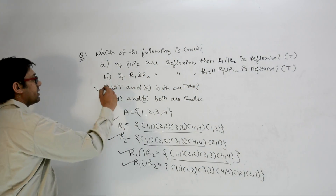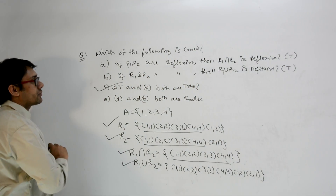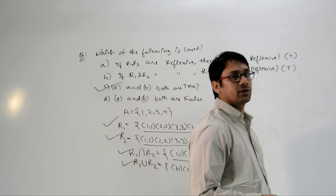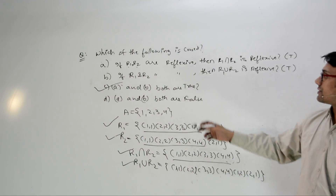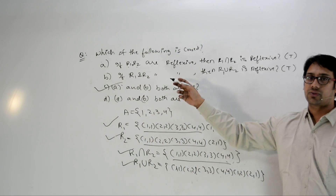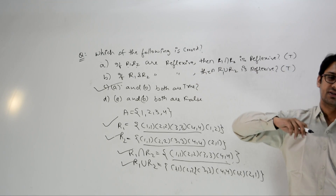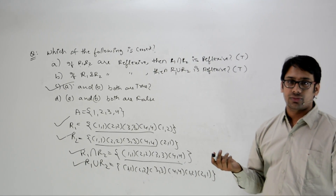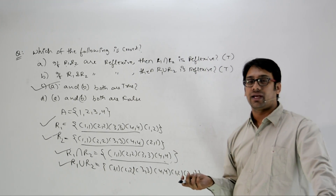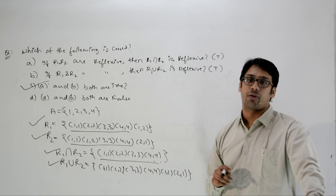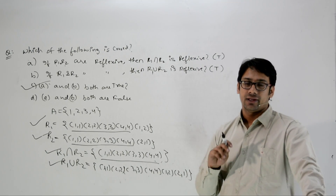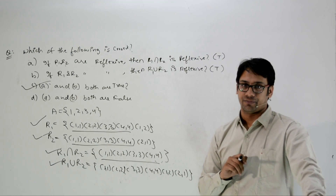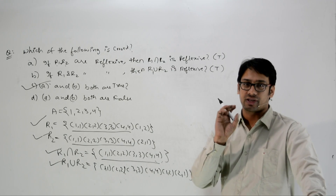Therefore option C is correct. It is very simple. These two questions essentially discuss the closure properties. What is the closure of a relation? If you take any two elements from a set and perform an operation, and the result also lies inside the same set, then the set is closed under that operation.